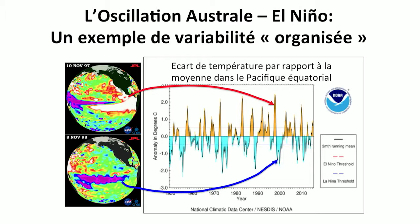A map shows the temperature anomalies, with warmer temperatures in the eastern part of the equatorial Pacific during the winter of 1997, and colder temperatures during the winter of 1998.